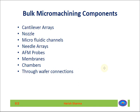The components that can be fabricated using bulk micro machining include cantilever arrays, nozzles, microfluidic channels, needle arrays, AFM probes, membranes, chambers, and through-wafer connections.